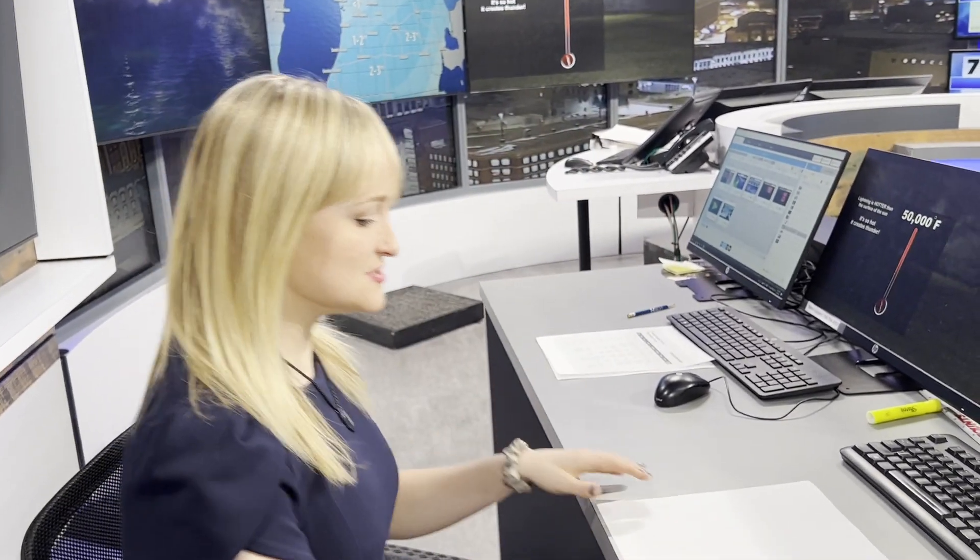Three, two, one. So thunder travels at the speed of sound, which is usually roughly 760 miles per hour. So if you want to figure out how fast that is per second, we just do some simple math.